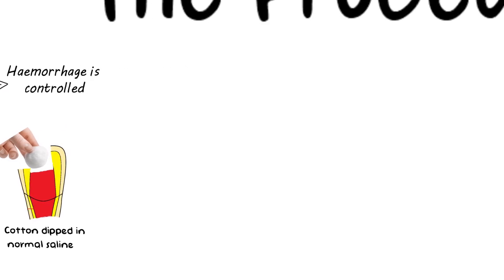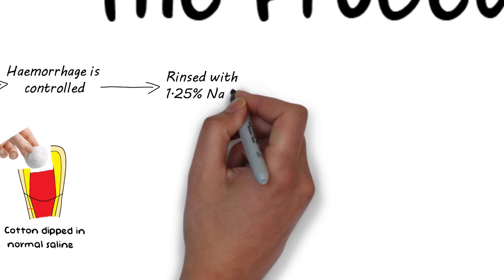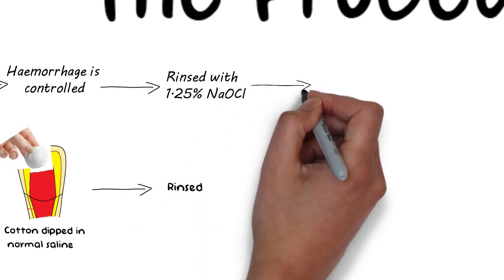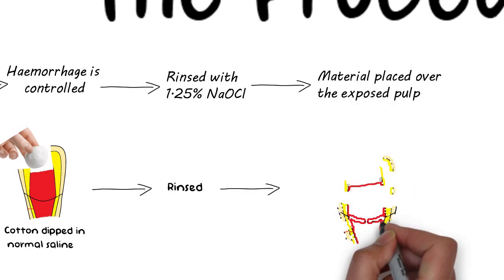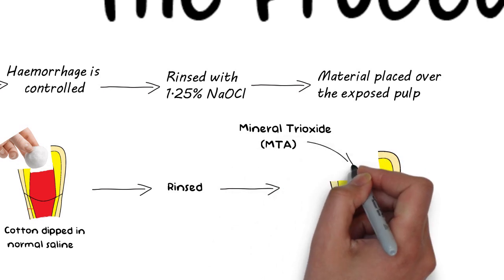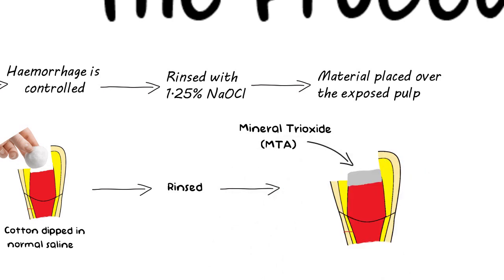The exposed pulp is then rinsed with 1.25% sodium hypochlorite. A material is placed over the exposed pulp. Mineral trioxide or MTA is now the recommended material, although traditionally calcium hydroxide was widely used but now it is being replaced by MTA.